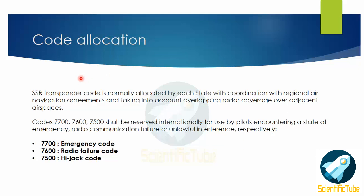The SSR transponder code is normally allocated by each state in coordination with regional air navigation agreements, taking into account overlapping radar coverage over adjacent airspace. Codes 7700, 7600, and 7500 are reserved internationally for use by pilots encountering a state of emergency, radio communication failure, or unlawful interference respectively. Code 7700 is the emergency code, 7600 is the radio failure code, and 7500 is the hijack code.